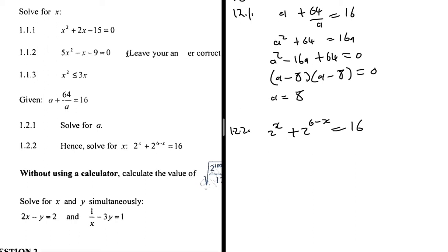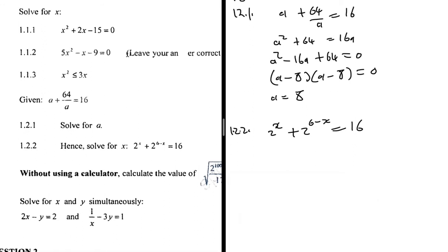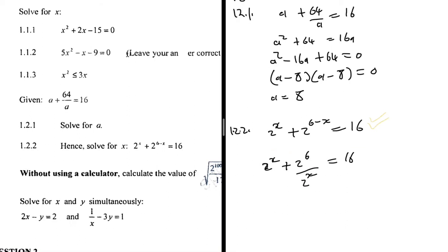I can let a = 2^x. Then 2^x + 2^6 / 2^x becomes a + 64/a = 16 — the same form as 1.2.1. So these two equations are equivalent and I can use the result from 1.2.1, where a = 8, since 2^6 = 64.